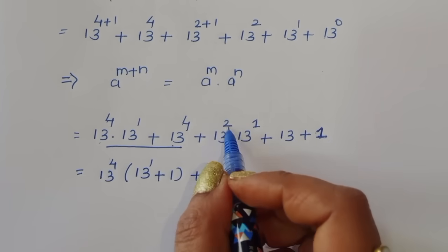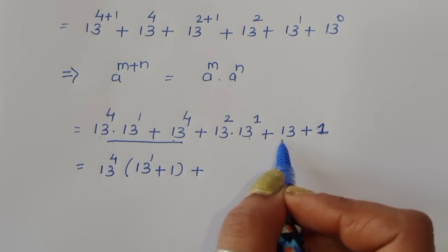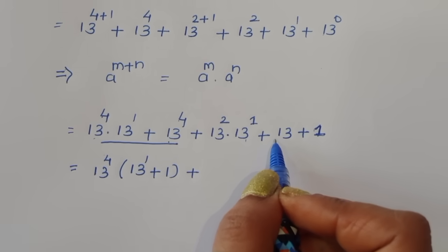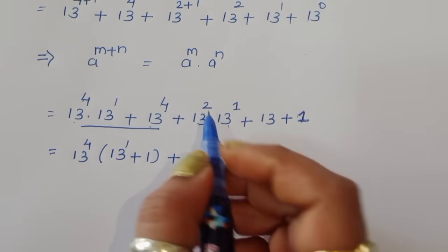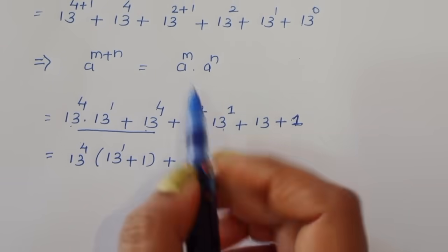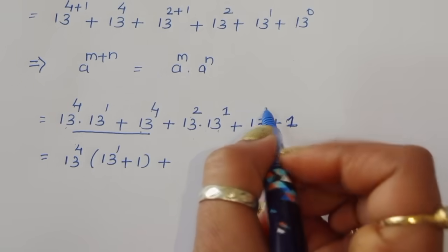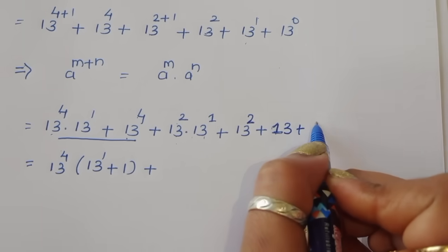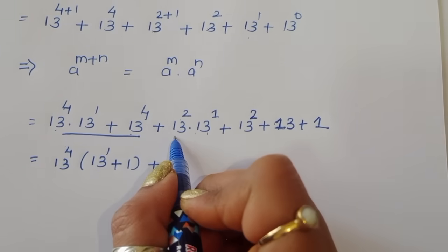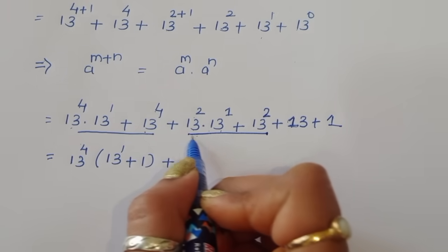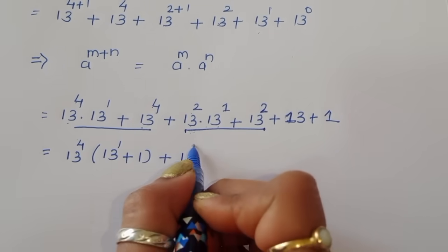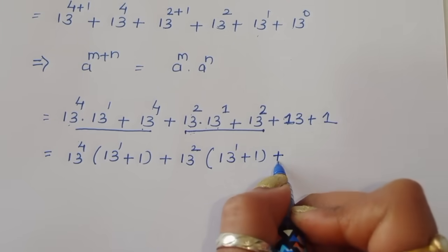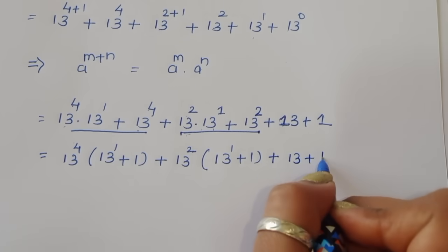Here we can see 13 power 2, 13 power 1, and 13. So we can take 13 as common here. When we take 13 common from 13 power 2 we get 13 power 2. We can see 13 power 2 times 13 power 1, plus 13 power 2, plus 13 power 1, plus 13 power 0, which is 1. So we take 13 power 2 as common from the remaining terms.